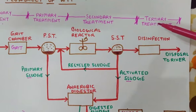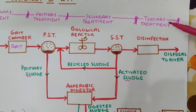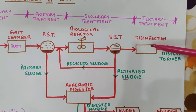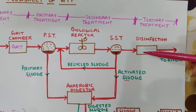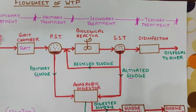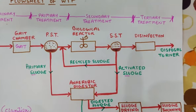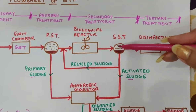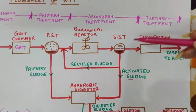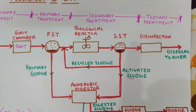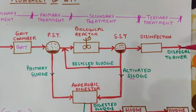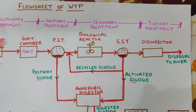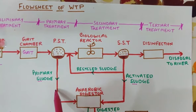After secondary treatment, we send the water to tertiary treatment. The tertiary treatment is the last treatment and involves only one thing: disinfection. The process is called disinfection, and it is done by chlorination — just to kill the harmful bacteria. This is a simple chemical reaction and chlorination is the last step of the wastewater treatment plant.